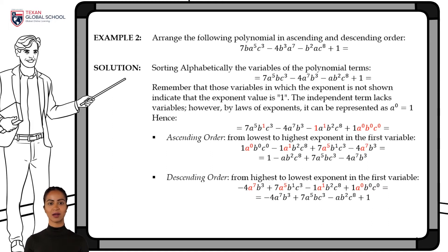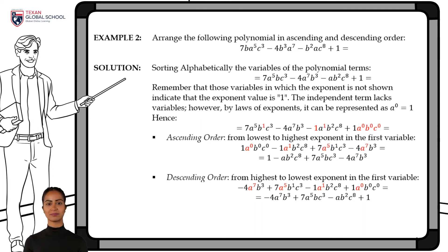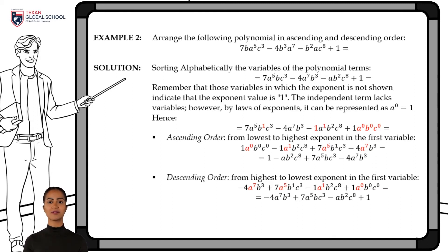This representation does not alter the polynomial since, by definition, every number raised to the 0 power yields 1. The next term is the one where variable a is raised to the 1st power, followed by the term with a raised to the 5th power, and finally the term with a raised to the 7th power. In descending order, the term with a raised to the 7th power comes first, then a to the 5th, then a to the 1st, and finally the independent term.